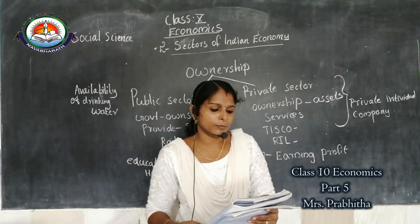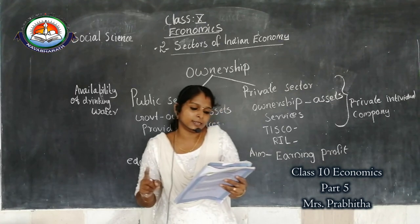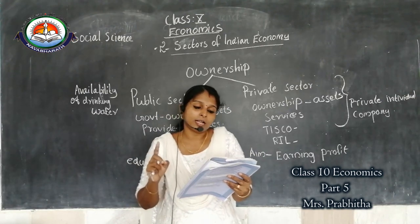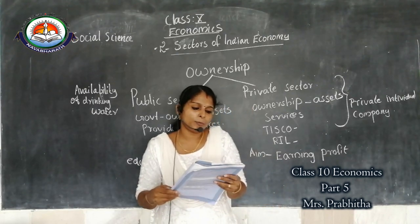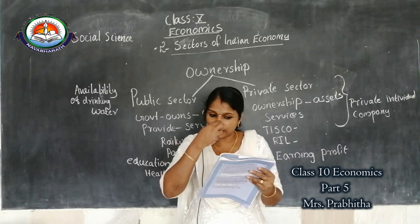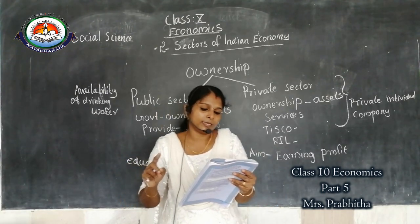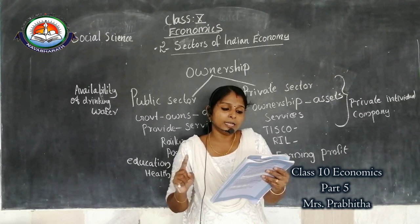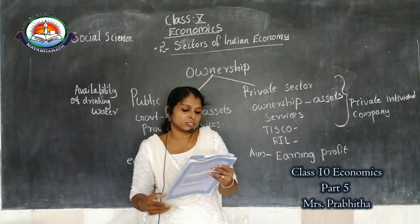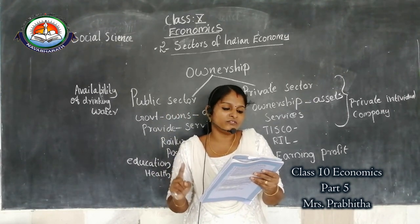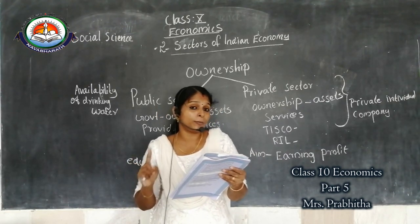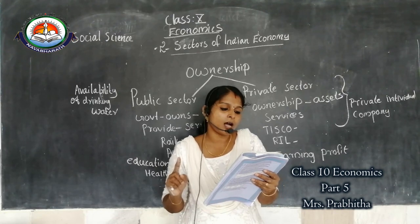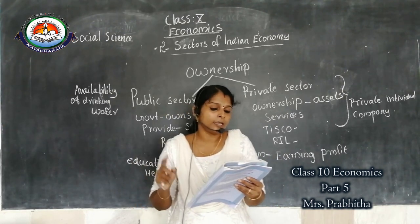Match the following — problems faced by the farming sector. Irrigated land: answer is construction of canals by the government. Low prices for crops: procurement of food grains by government. Debt burden: banks to provide credit with low interest. No job in the off-season: setting up agro-based mills. Compelled to sell their grains to local traders soon after harvest: cooperative marketing societies can help.